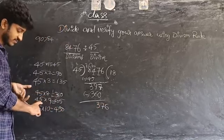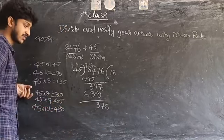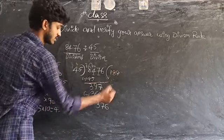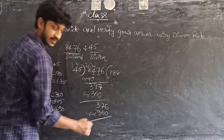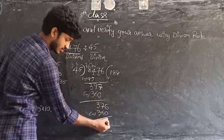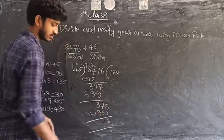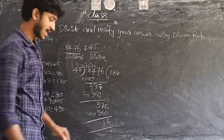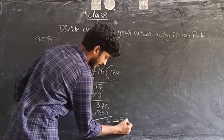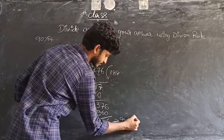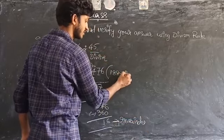Since 45 into 8 is 360 and 45 into 9 is 405, and 360 is less than 376 while 405 is greater, I take 8 times again. 45 into 8 is 360. Subtraction: 376 minus 360 — 6 minus 0 is 6, 7 minus 6 is 1, 3 minus 3 is 0. I get 16 as the remainder.